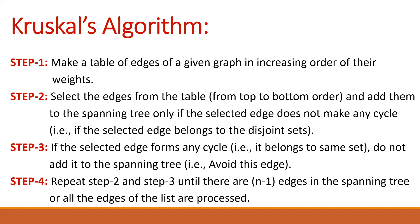We repeat steps two and three until either we get n minus one edges in the spanning tree — where n is the total number of vertices, so if there are five vertices we stop at four edges — or until the list is exhausted, meaning all edges from top to bottom have been processed.